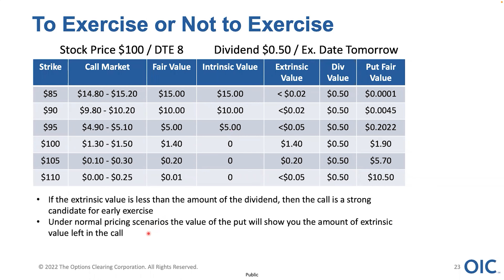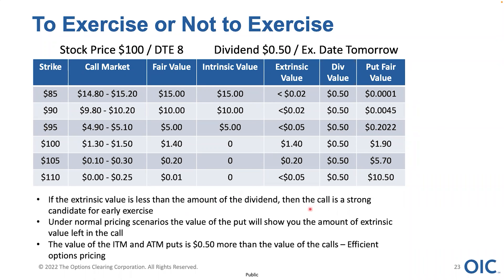Under normal pricing scenarios, the value of the put will show you the amount of extrinsic value left in the call — due to put-call parity, these values should be somewhat similar. Sometimes you can look at the corresponding put: if the 95 put has a fair value of 20 cents, that's still less than the 50 cents in the dividend, telling you that the call is still a candidate to be exercised early. The in-the-money and at-the-money puts in this case are 50 cents more than the value of the calls due to efficient market pricing — the dividend is being priced into the value of the puts. For example, the 105 put has a fair value around $5.70 because the 50-cent dividend is baked into the price of that put.